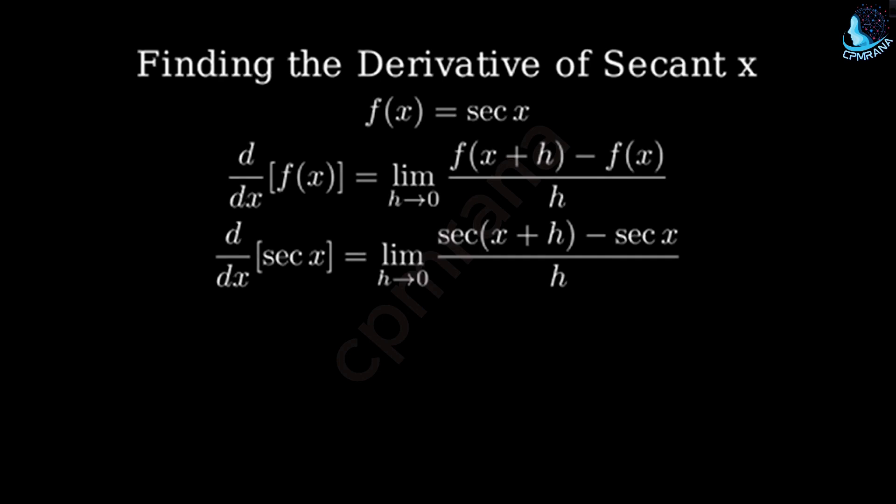Remember that secant is 1 over cosine, so we can rewrite this as the limit as h approaches 0 of 1 over cos(x+h) minus 1 over cos x, all divided by h.